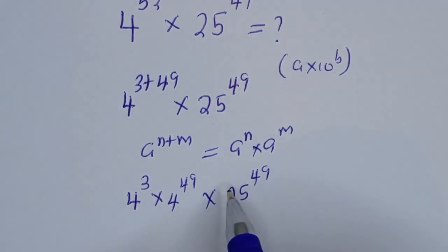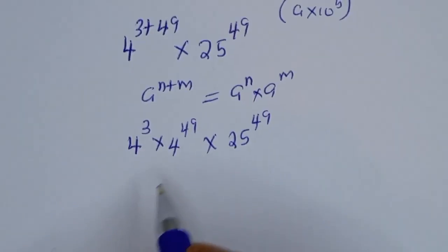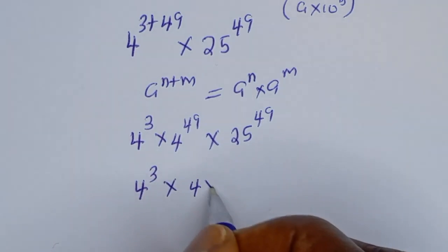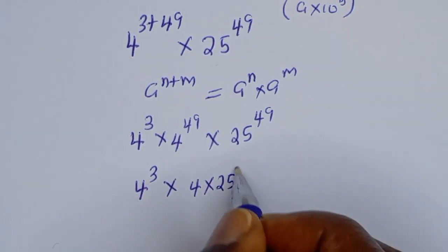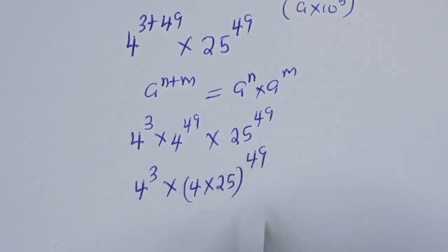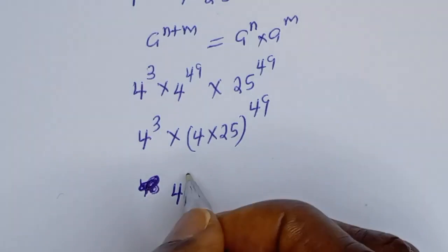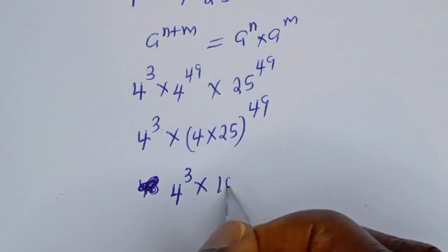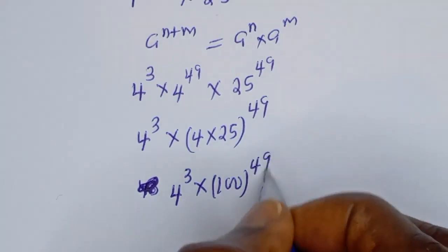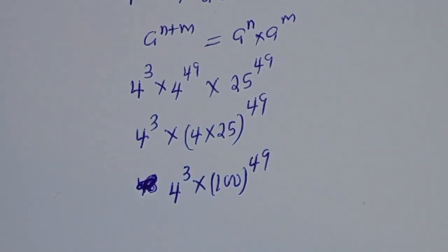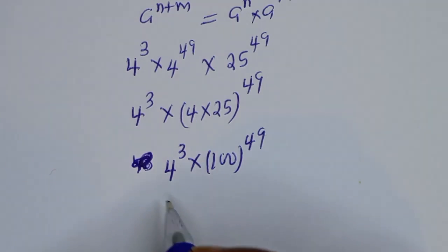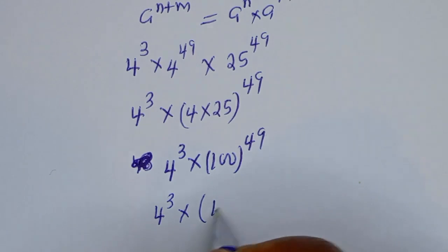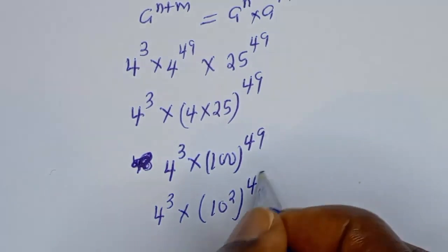Now if you look at these two, they have the same exponent. So this can be written as 4 to the power of 3 multiplied by 4 multiplied by 25, to the power of 49. 4 multiplied by 25 is 100, so that is 100 to the power of 49. Then this is 4 to the power of 3 multiplied by 100, which can be written as 10 squared, to the power of 49.